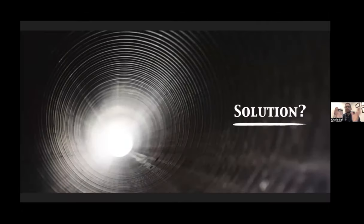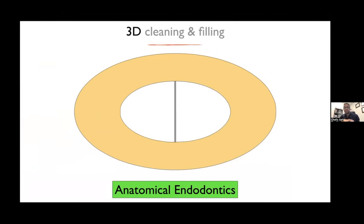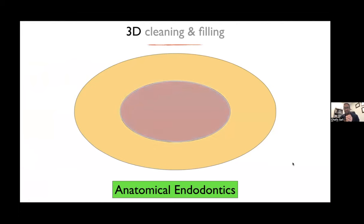So what is the solution? The solution is to have a three-dimensional cleaning and filling technique, whereby we have an instrument that spans all the anatomy of the root canal system, and a technique to seal and fill the root canal system that also adapts to the original anatomy — which is what we call anatomical endodontics.